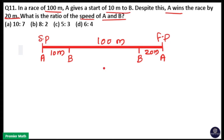When A finishes 100 meters, B finishes only 80 meters. So distance is not constant — when A finishes 100, B only finishes 80. Speed is also varying because when A reaches 100, B reaches only 80.